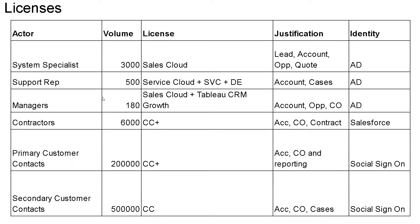Coming to the licenses part: we have 3,000 system specialists — I recommend providing them a Sales Cloud license. They will be working on prospects, accounts, opportunities, and work orders, and their identity would be Active Directory. For support representatives, we have 500 — I recommend going with Service Cloud along with Service Cloud Voice plus Digital Engagement. They would be working on customer accounts, cases, and leads raised from different channels, and their identity would be Active Directory.